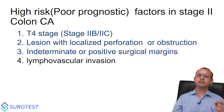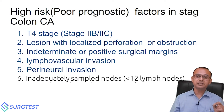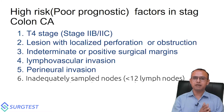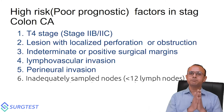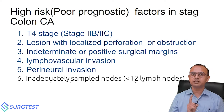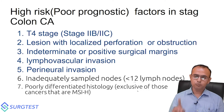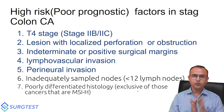Lymphovascular invasion or perineural invasion mentioned in the pathology report is another high-risk feature. In stage two, if the resected specimen has fewer than 12 lymph nodes sampled, that patient definitely needs chemotherapy because of inadequate lymph node resection. Poorly differentiated histology — exclusive of MSI-high cancers — is also a high-risk feature requiring chemotherapy.